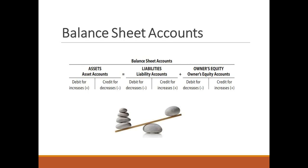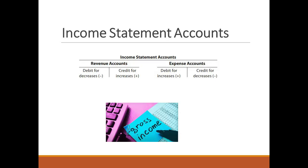The debit and credit rules for balance sheet accounts are as follows. Asset accounts: debit for increases, credit for decreases. Liability accounts: debit for decreases, credit for increases. Owner's equity accounts: debit for decreases, credit for increases.